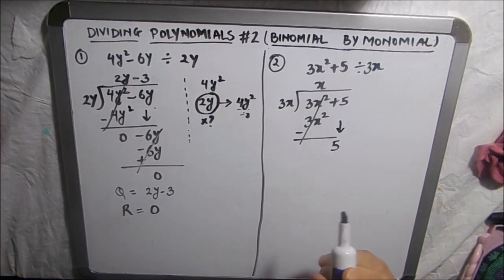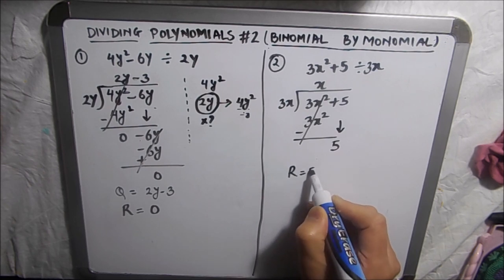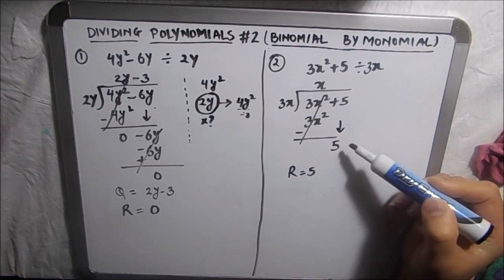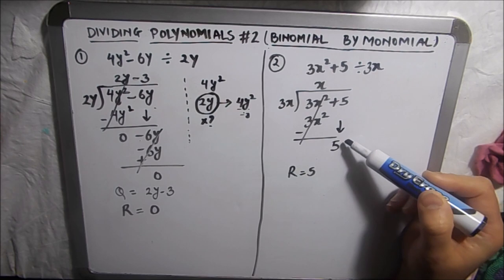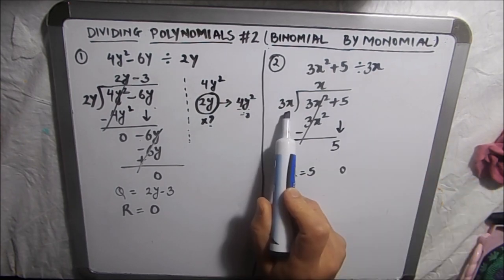Also we need to check one more thing, that our remainder is 5 here. So we have to check the degree of remainder. The degree of remainder here is 0. Degree of the divisor is 1.